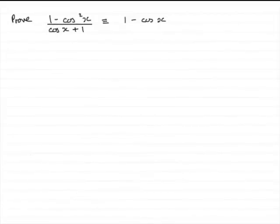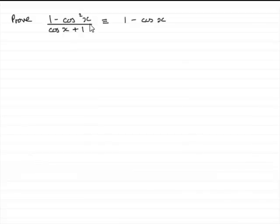Welcome to this tutorial, another one in my series on proving trig identities. In this one, what we've got to do is prove that 1 minus cos squared x, all divided by cos x plus 1, is identical to 1 minus cos x.